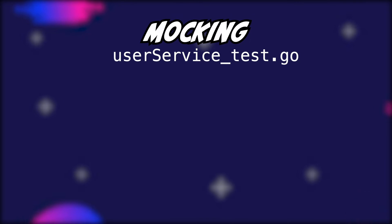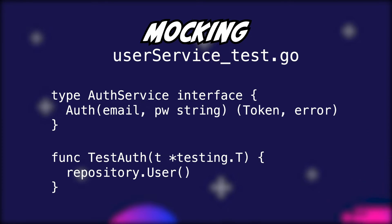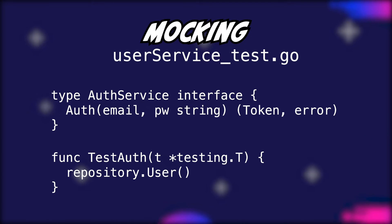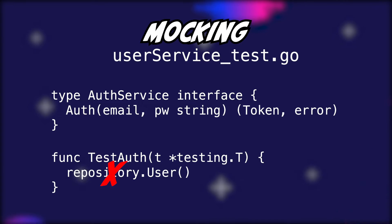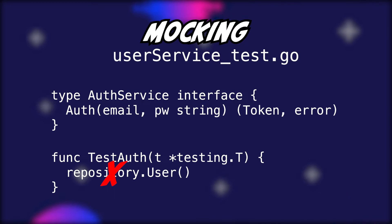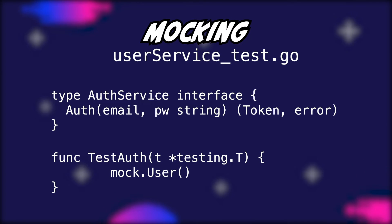If you were to write a test for the auth function, you would need to use the repository to retrieve user information, and as shown earlier the repository uses a database connection to fetch the data. But the hard truth is: you don't always have a database connection. Even without a database, you still want to write tests to verify if your code is working correctly — and that is exactly where mocking comes into play.